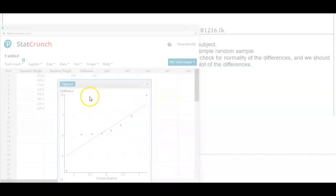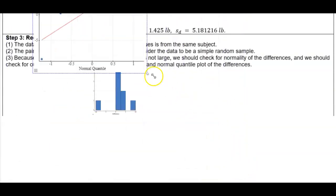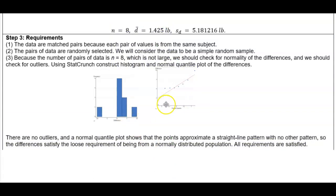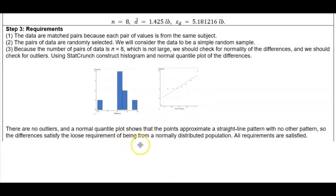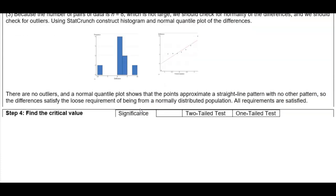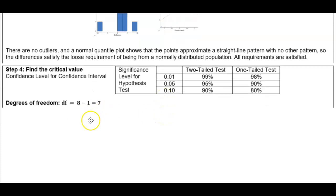We can see that there are no outliers, and the normal quantile plot shows the points approximate a straight line pattern with no other pattern. So the differences satisfy the loose requirement of being from a normally distributed population. Therefore, all requirements are satisfied. Now let's move on to step four, where we want to find the critical value.